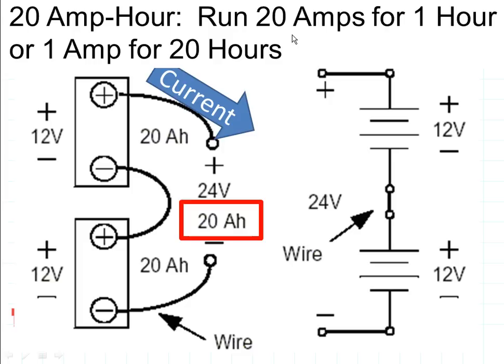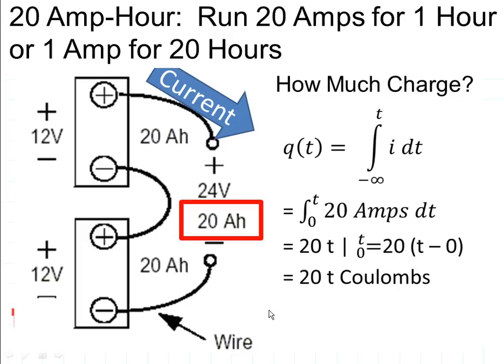It means we could either run 20 amps for one hour, or we could run one amp for 20 hours.